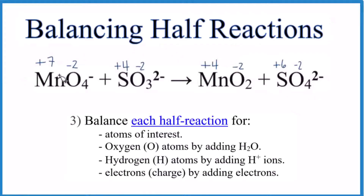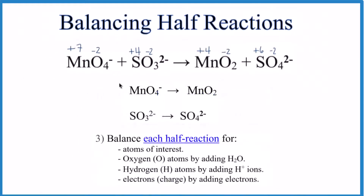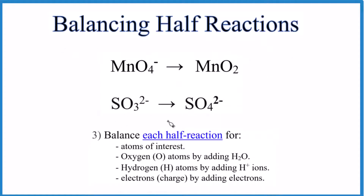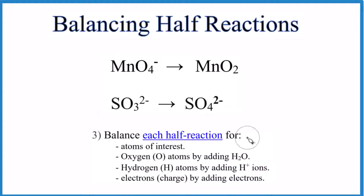Here's the original equation and these are the half reactions — let's focus on balancing them. First, balance the atoms of interest: manganese to manganese, sulfur to sulfur — already balanced. Then we balance the oxygen atoms by adding water, since these reactions are aqueous. I have four oxygens on one side and two on the other, so let's add two water molecules. Now we have two plus two equals four oxygens on each side — looking good.